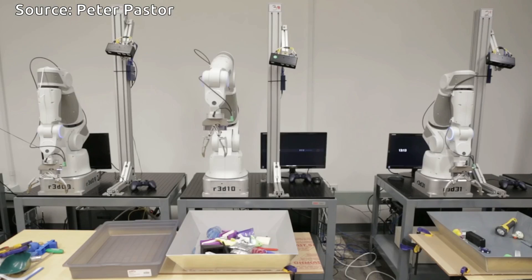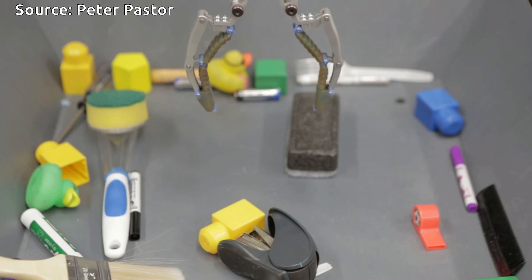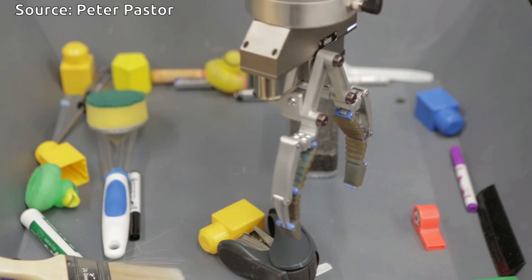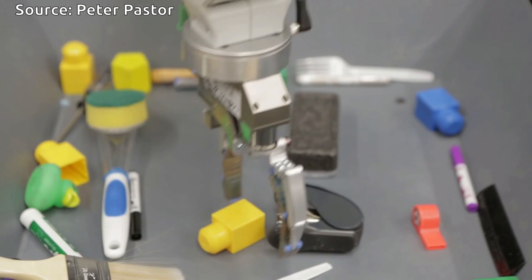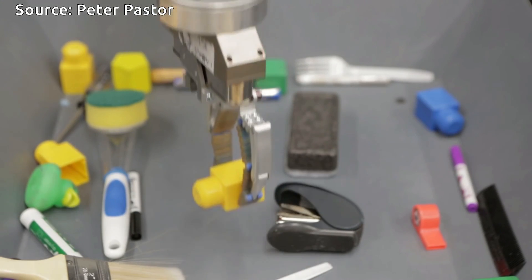In essence, the robot is constantly predicting, by observing the motion of its own hand, which kind of subsequent motion will maximize its chances of success. The result is continuous feedback, what we might call hand-eye coordination.